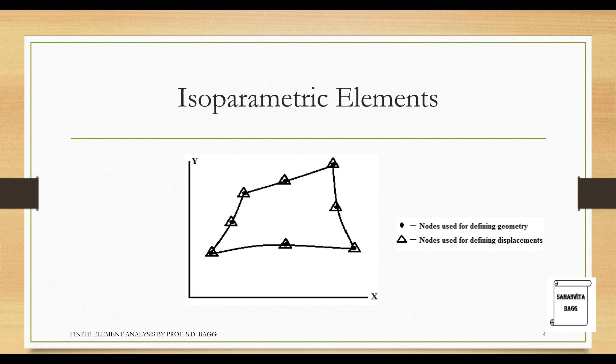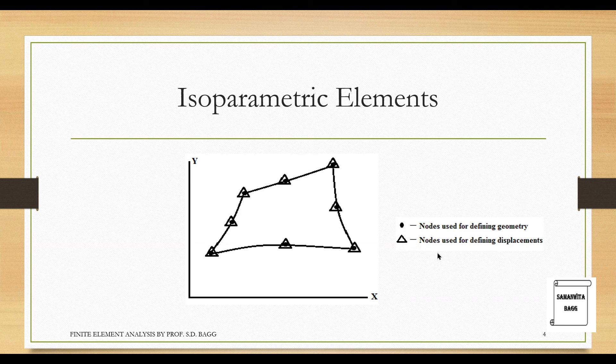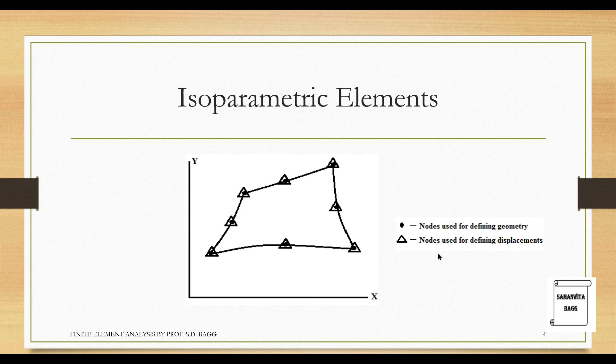If you recollect, we have already done the derivation for 8-noded serendipity element in FEA. Here you can see that these dots indicate nodes used for defining geometry. So there are total 8 of them. Triangle represents the nodes used for defining displacements. So these are the nodes where you are going to figure out the displacement. So accordingly you will have 8 shape functions for the same. And when you have 8 shape functions, you can calculate the displacements correspondingly at these points.